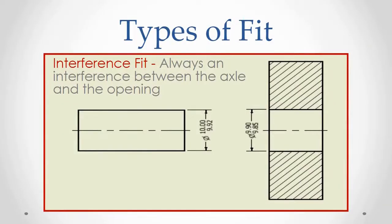In this case, the minimum size of the axle is 9.92, but the maximum size of the opening is 9.90. Therefore, if the parts are manufactured within tolerance, then the axle will always be larger than the opening. This type of fit may be called a press fit or a force fit, such that the two parts must be pressed together in order to assemble them.